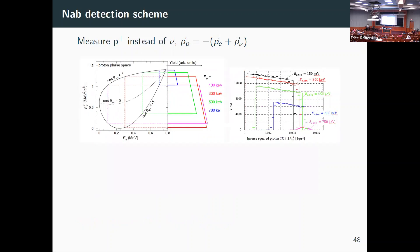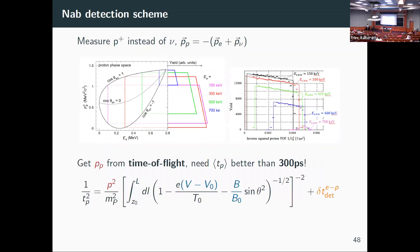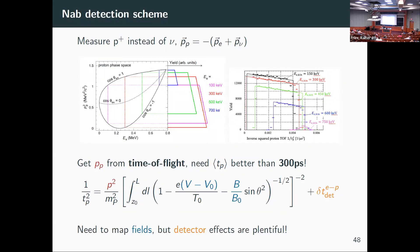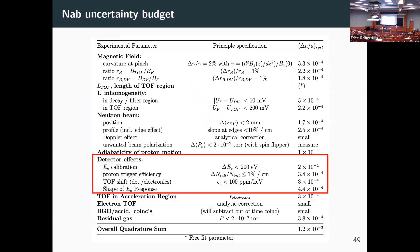The procedure: measure electron energies precisely, make cuts, then look at proton momentum spectra through time of flight, fitting to the linear portion. In order to meet our systematics budget, we cannot have a bias in the proton time of flight larger than 300 picoseconds. That's a scary number — quite at the edge of what we think we can do. The time of flight depends on propagation through electric and magnetic fields, plus additional timing effects from detector effects.